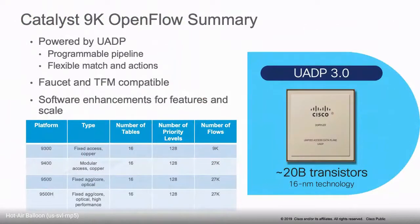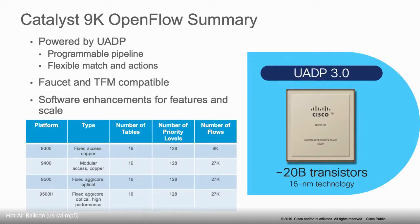We use an internal proprietary ASIC called the UADP — the Unified Access Data Processor — also called Doppler. It is a programmable pipeline, so the abstraction matched pretty well with what we needed for OpenFlow with flexible match and actions. It's compatible with Faucet, we support TFM, and the nice thing is, given that the ASIC is programmable, if you want new features or even to increase scale, it's a change in software — you don't need to change the hardware at all.